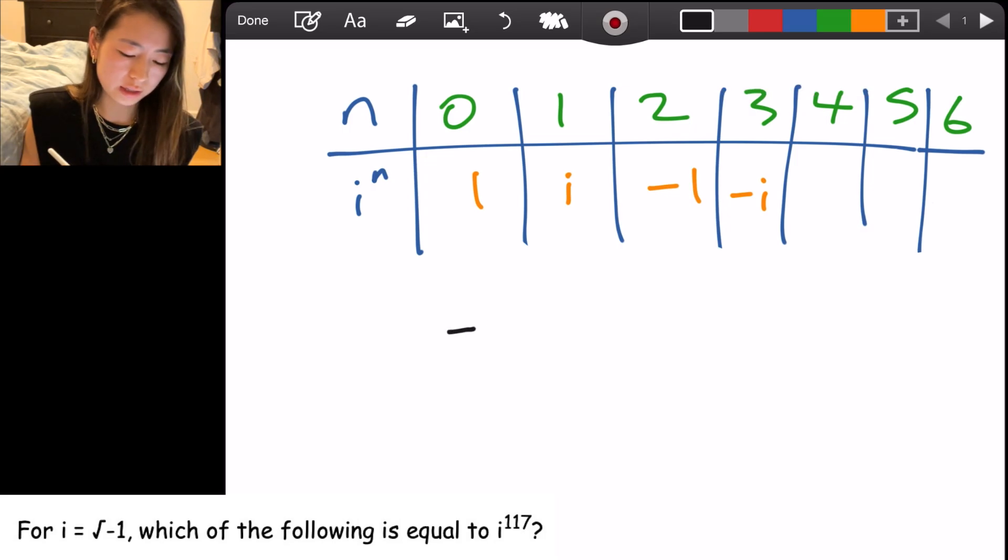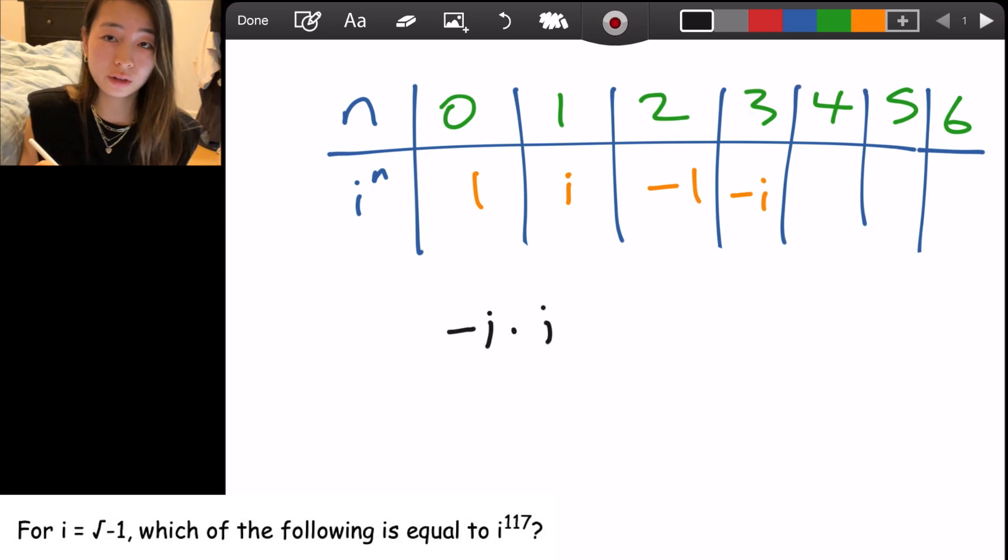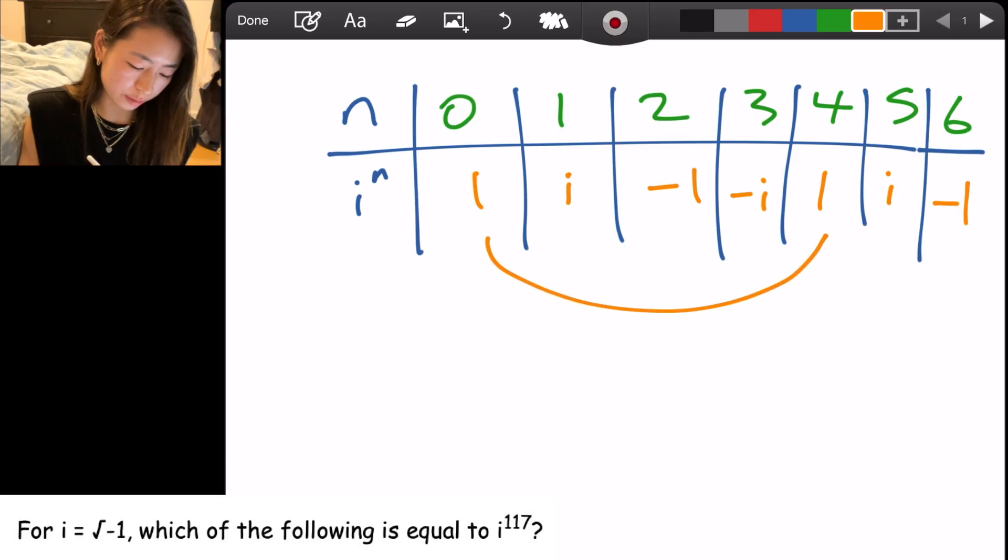i to the fourth power, be careful on this one, that's negative i times i. So you get negative i squared, which is just going to be negative negative 1. So it's positive 1. Then to the fifth power, if we multiply by i again, it's just i. i to the sixth power, negative 1.